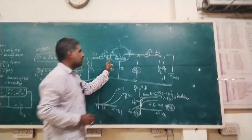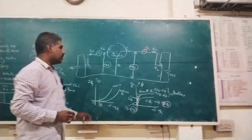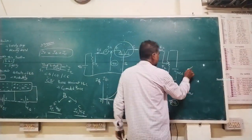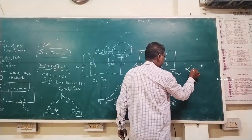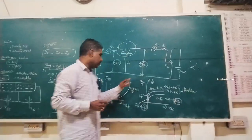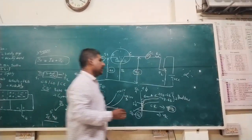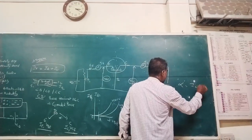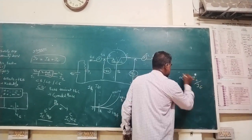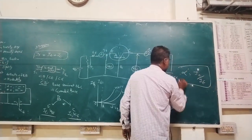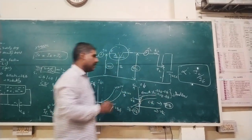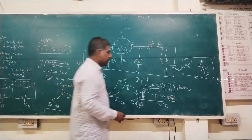In common base configuration, the current amplification factor is denoted by alpha. Alpha is the ratio of output current to input current — that is, alpha equals IC divided by IE.